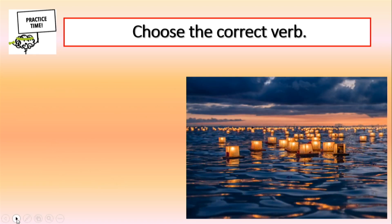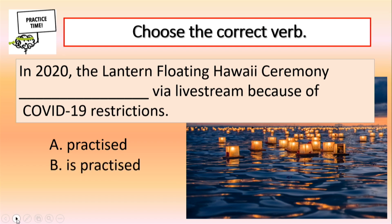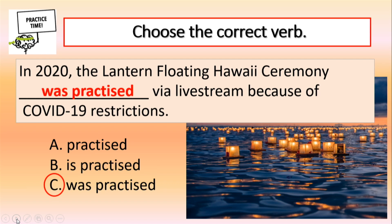Ready for another one? In 2020, the lantern floating Hawaii ceremony via live stream because of COVID-19 restrictions. What verb would you choose — practiced, is practiced, or was practiced? Very good! It is C, was practiced. The ceremony happened in 2020, that is, in the past. That is why was, the past tense of the verb to be, is used.